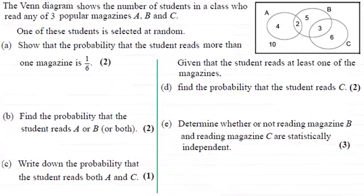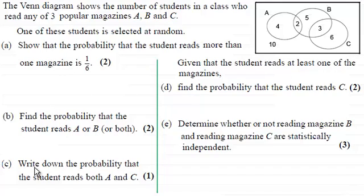In this question we're given that the Venn diagram shows the number of students in a class who read any of three popular magazines A, B and C. We've got five questions here to answer. One of these students is selected at random and in the first part we've got to show that the probability that the student reads more than one magazine is one sixth.